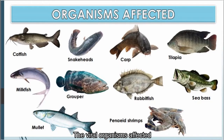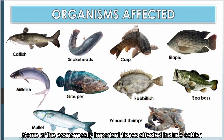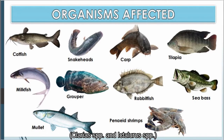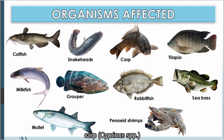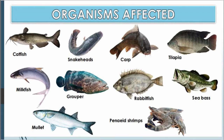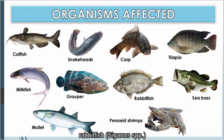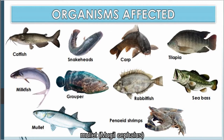The viral organisms affected include economically important fishes such as catfish (Clarias species and Ictalurus species), snakeheads (Ophicephalus striatus), carp (Cyprinus species), tilapia, milkfish (Chanos chanos), grouper (Epinephelus species), rabbitfish (Siganus species), sea bass (Lates calcarifer), mullet (Mugil cephalus), and penaeid shrimps.